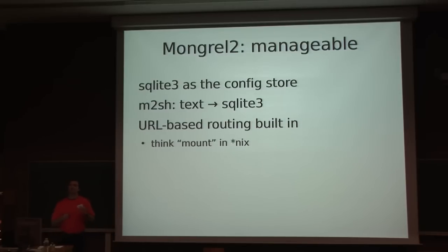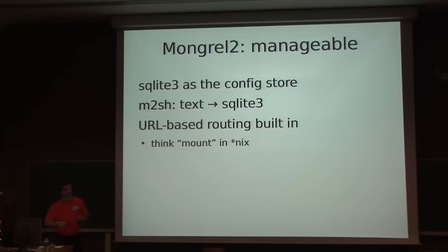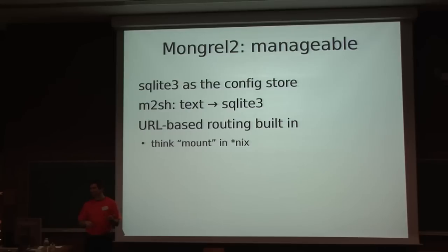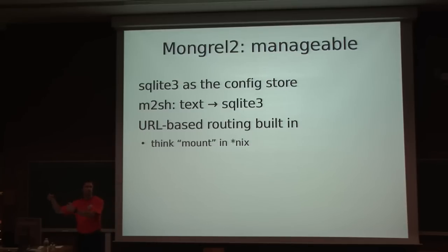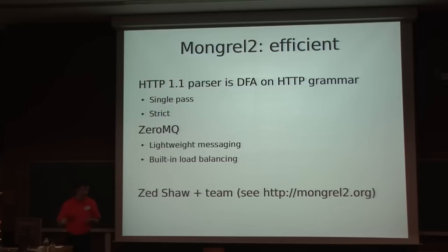The manageability of Mongrel 2 is also very interesting — it has its configuration embedded in an SQLite3 database. This means you can use the built-in m2sh (Mongrel shell) to control the operation of Mongrel 2 and convert standard text configs into SQLite3, but you can also use your own configuration database and integrate the SQLite3 that Mongrel 2 uses with your configuration backend. Another interesting thing is that you can use Rails-like routing, specifying which handler attaches to which URL subtree — think of it like mounting volumes under Unix.